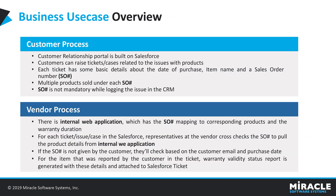Here is the business use case. Two things we need to consider: one is from the customer side, and the second is from the vendor side. The customer relationship portal is built on Salesforce, and customers can raise tickets related to product issues within the CRM application. Every ticket raised by the customer will have a sales order ID, item name, date of purchase, and so on. Sometimes more than one product can be sold under one sales order ID. The expo number is not mandatory while logging issues into the CRM application. On the vendor side, there will be an internal web application where product-related information can be found within the database, and that information can be retrieved using the internal web application, which is on-premises.